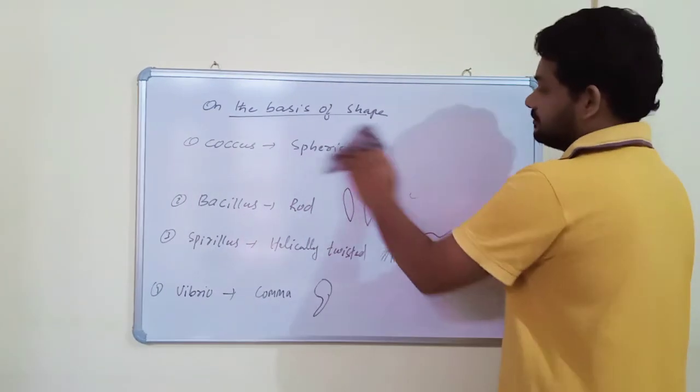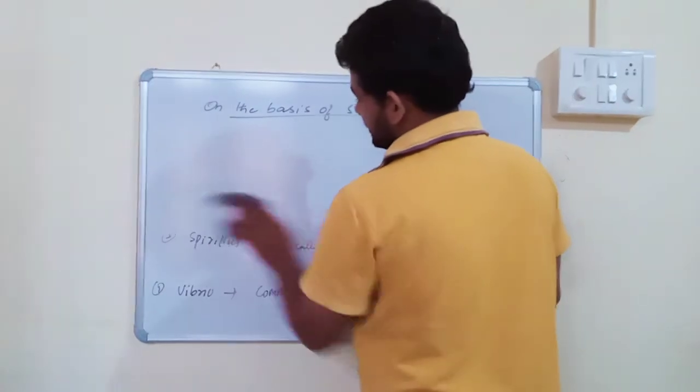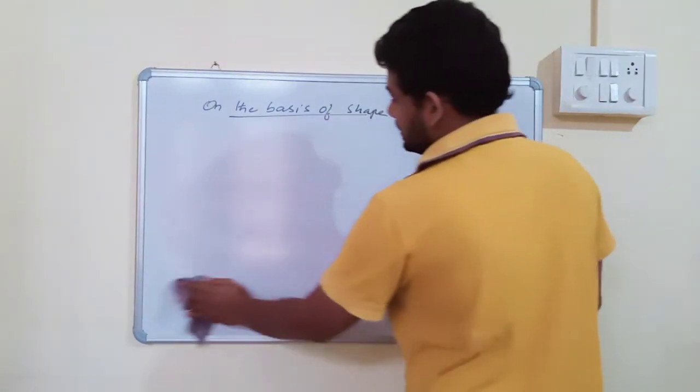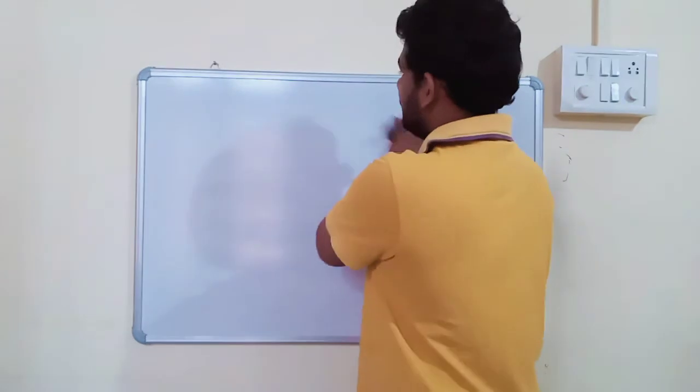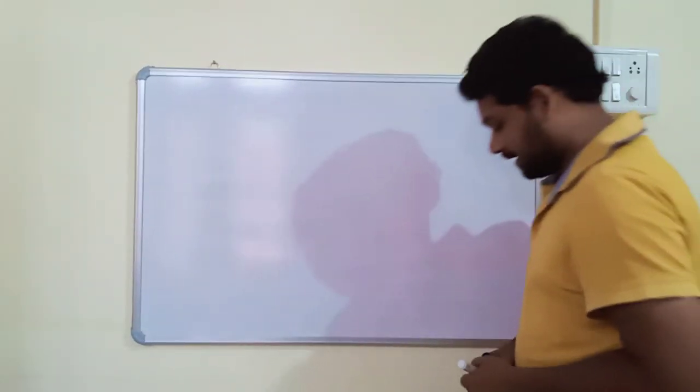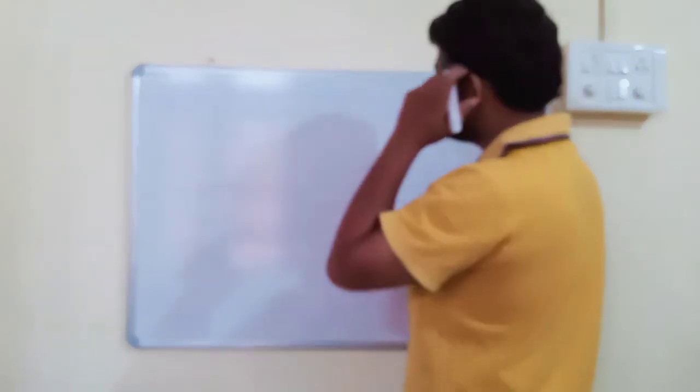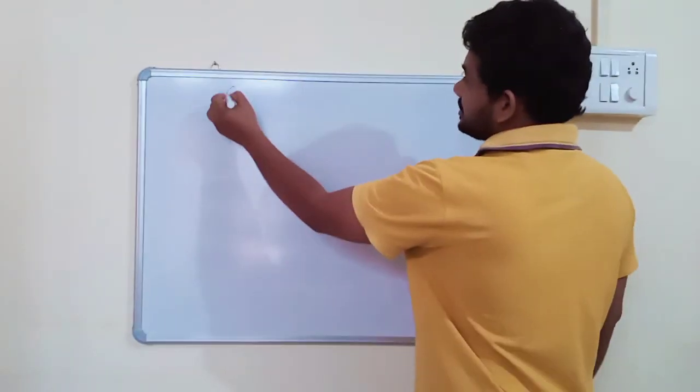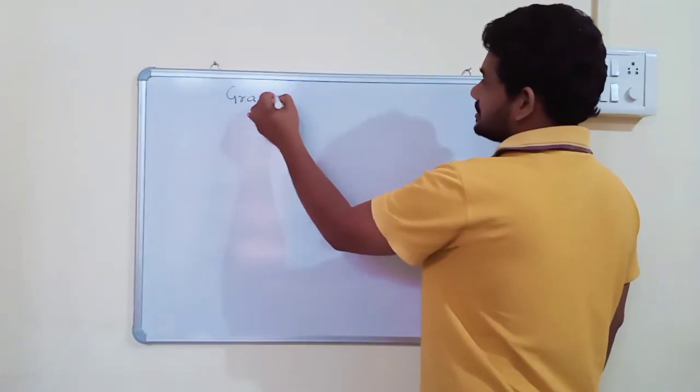So these are the different types of bacteria. They are classified on the basis of their shape: mainly Coccus, Bacillus, Spirillum and Vibrio. And next one is another important topic based on Gram staining.